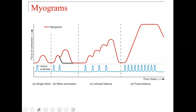A myogram shows the force of contractions and how it relates to the action potential — the signal coming from the brain. A short, brief action potential produces what looks like a muscle twitch: it goes up slightly and then comes back down. However, if you send several more signals, you get what's referred to as wave summation. The muscle goes up with the first signal, comes down just a little bit, then goes back up — adding to itself instead of fully relaxing.